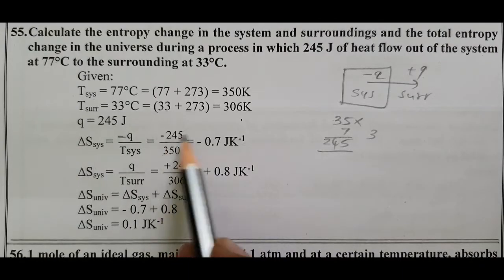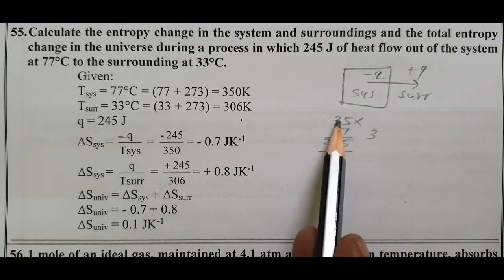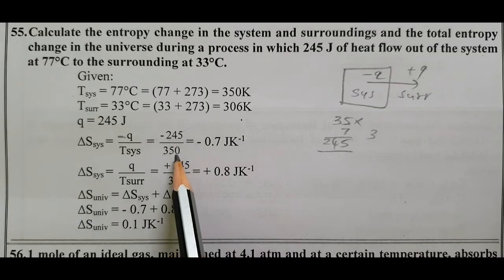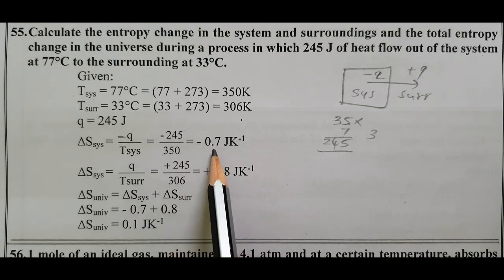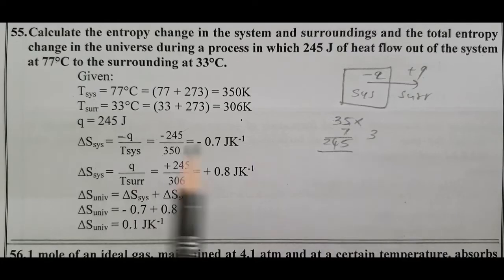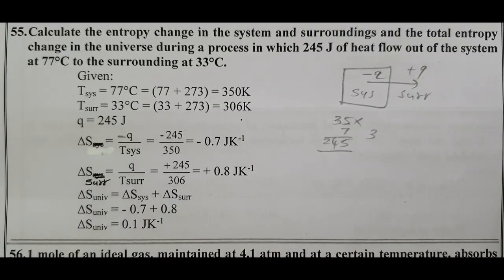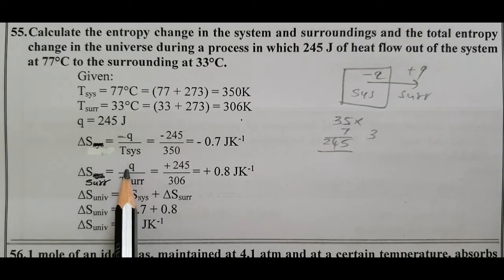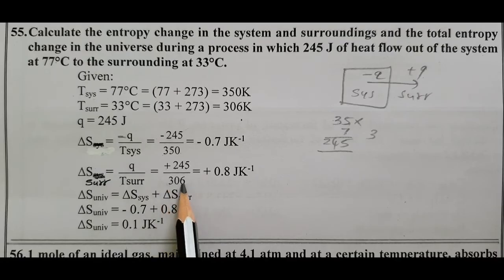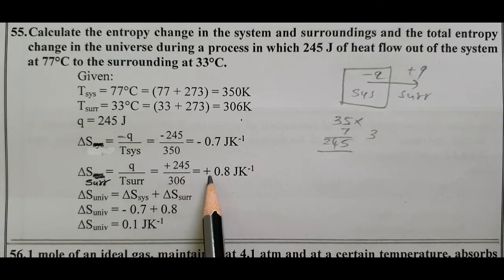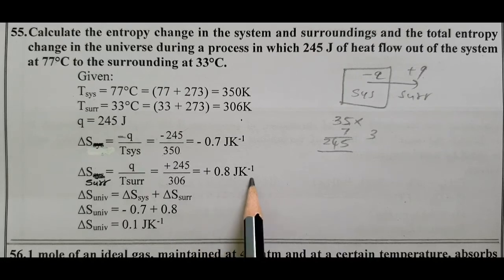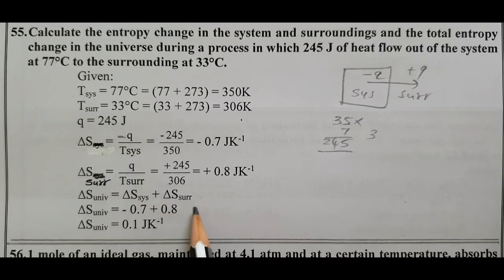35 into 7 equals 245, giving delta S system equals minus 0.7 J Kelvin power minus 1. Delta S surrounding equals plus Q divided by T surrounding, which is 245 divided by 306, approximately 0.8 J Kelvin power minus 1. Delta S universe equals delta S system plus delta S surrounding.